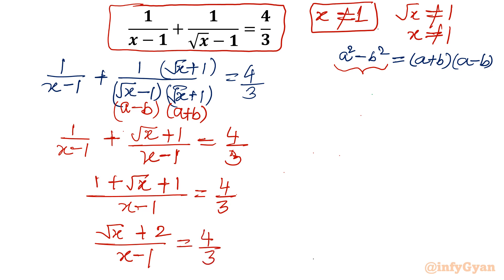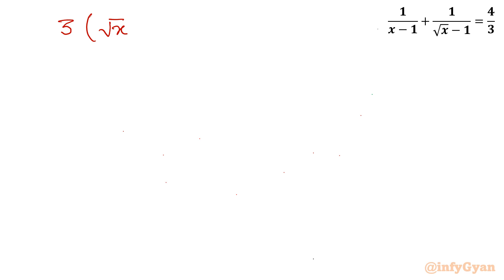Now I will cross multiply. So it becomes 3 times (root x plus 2) equal to 4 times (x minus 1).